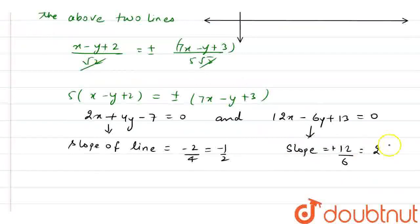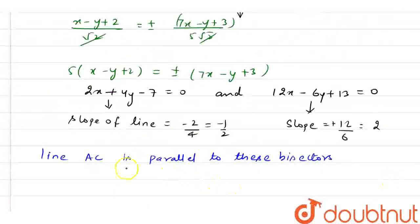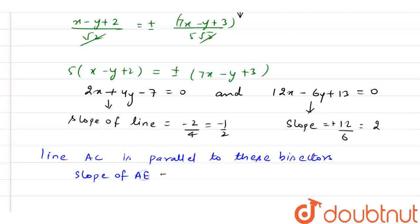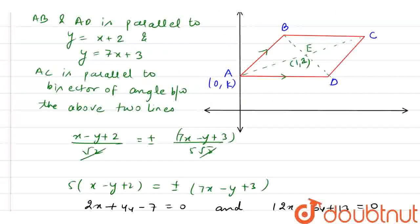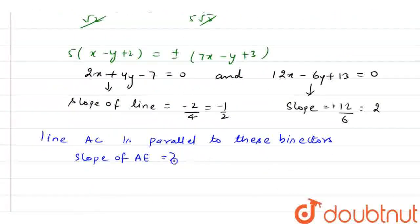Now, the line AE is parallel to these bisectors. Line AC is parallel to these bisectors. So, we can find the slope of AE and that equals (k - 2) / (-1) and that equals -1/2.